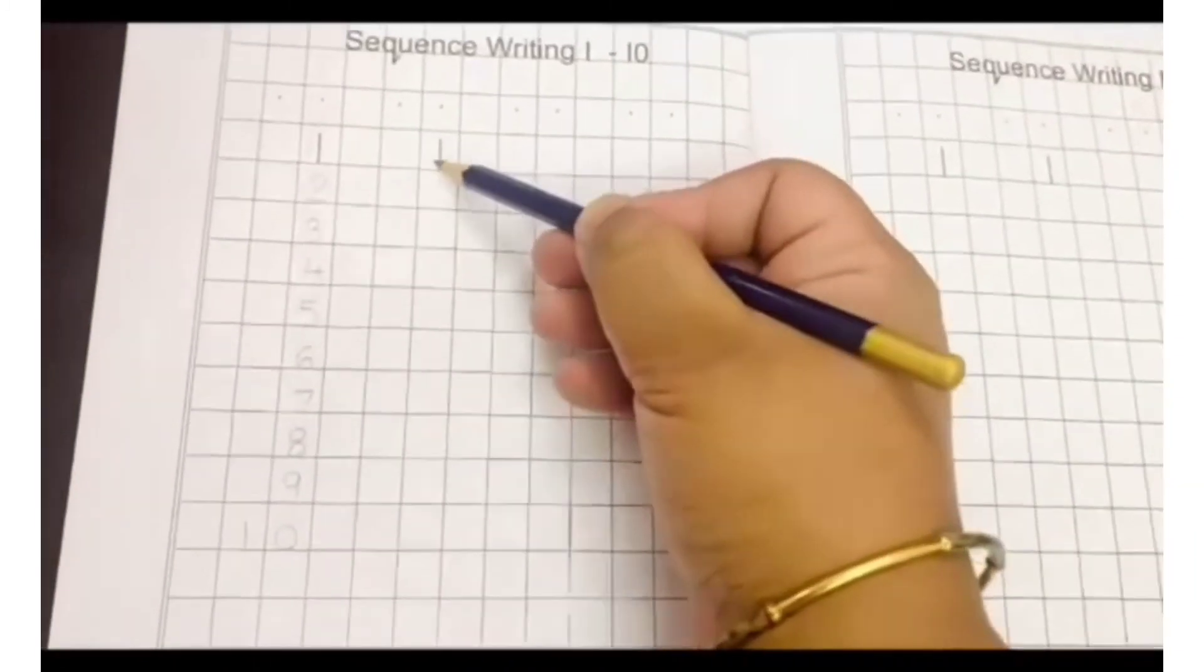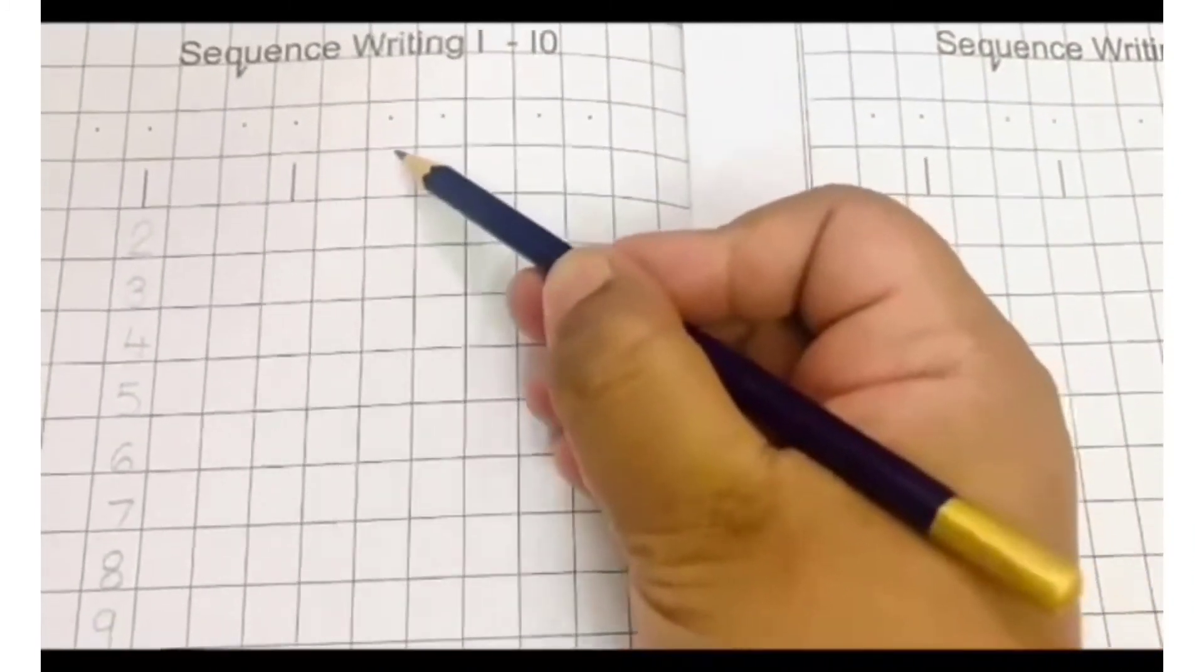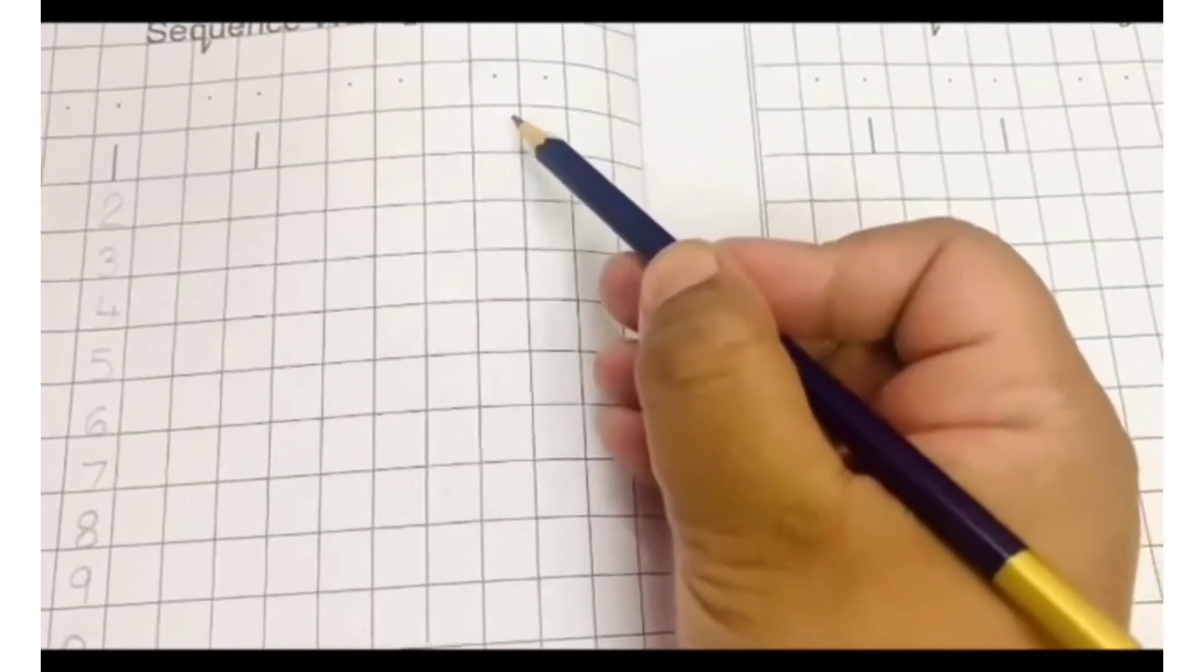In the second column, also, you will write from the number 2. In the last two columns, you will write from the number 1.